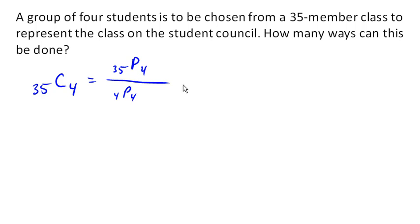So this says from 35 people, I need to pick four. So I got 35 choices for the first person, 34 for the second, 33 for the third, and 32 for the last choice. And then I'm gonna divide that by the different ways of ordering four people. So then I have four choices for the first person, three for the second, two for the third, and one for the last.